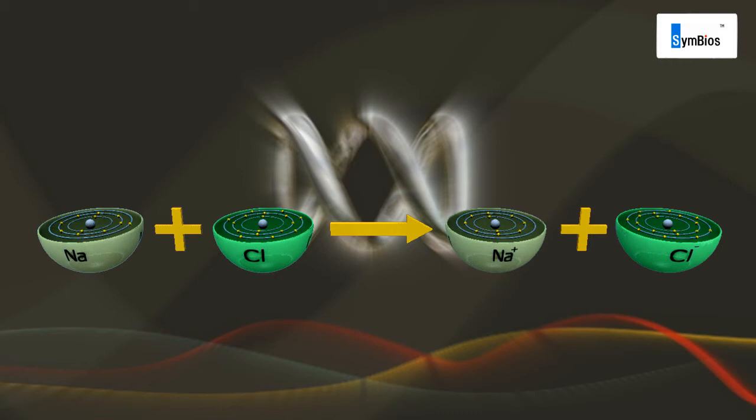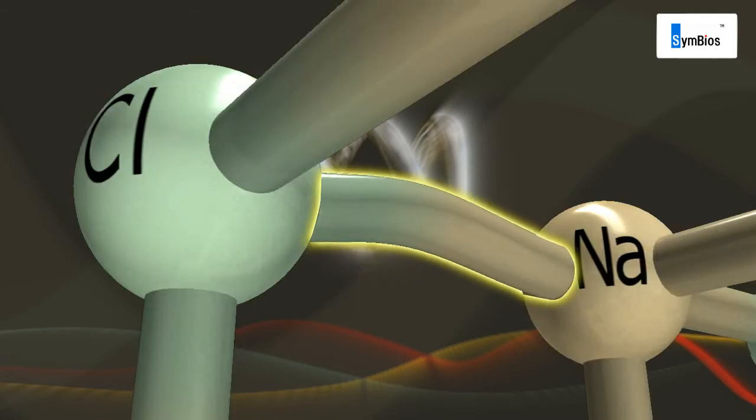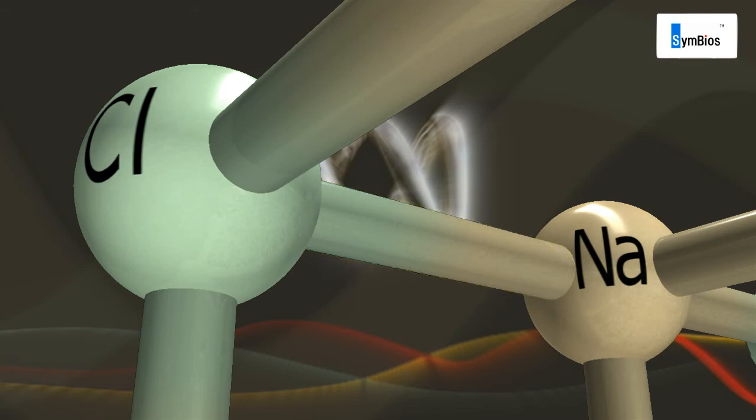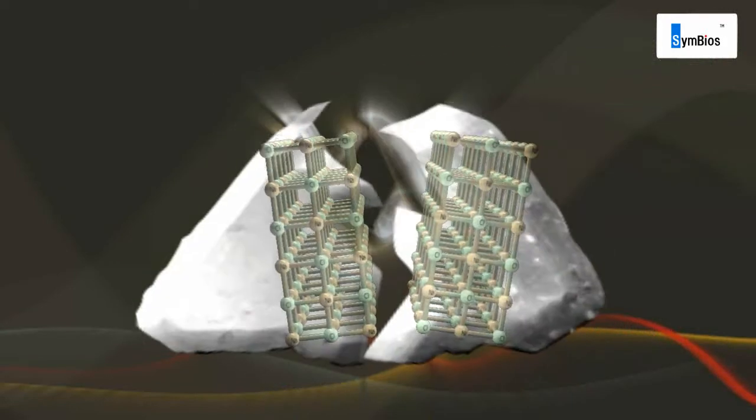Properties of ionic compounds: The strong electrostatic forces between ions make ionic compounds hard to break and their crystalline molecular arrangement make them brittle.